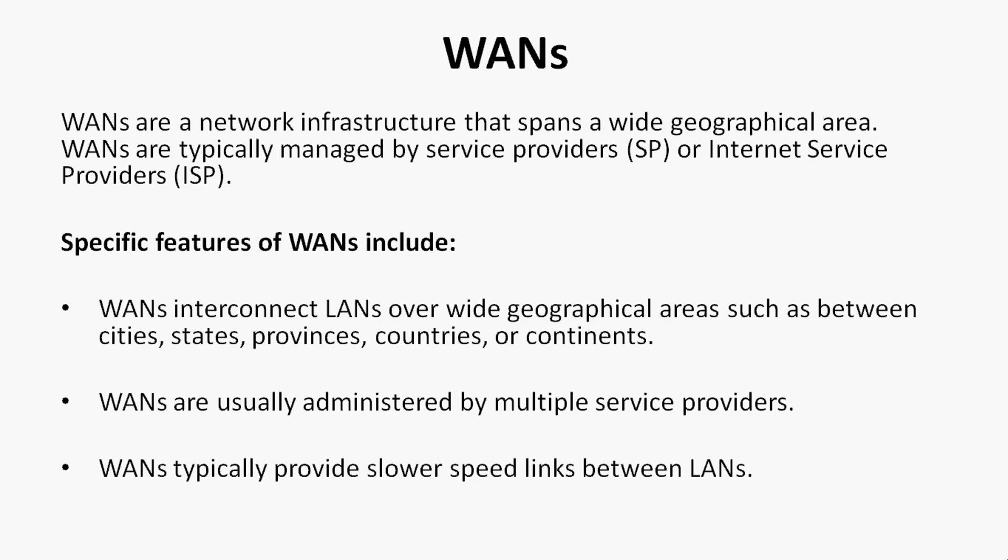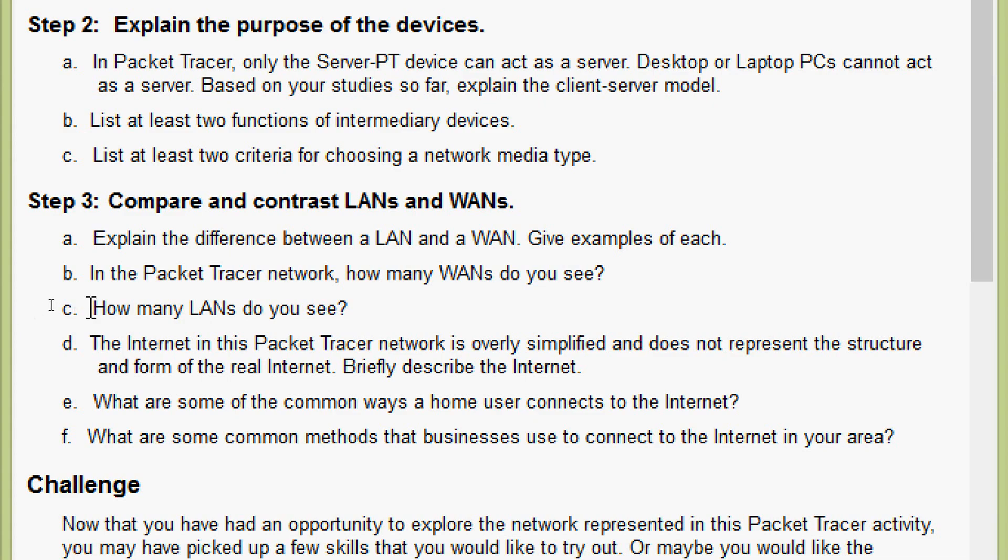Wide area networks (WANs) are a network infrastructure that spans a wide geographical area. WANs are typically managed by service providers or ISPs. WANs interconnect LANs over wide geographical areas such as between cities, states, provinces, countries, or continents. WANs are usually administered by multiple service providers and typically provide slower speed links between LANs.